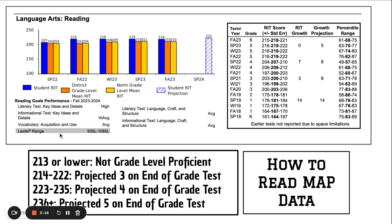Students are tested in different categories and there are five of them: literary text key ideas and details — the student scored very high in that category; informational text key ideas and details, which is nonfiction — that's high average; vocabulary — average; literary text language craft and structure — average; and then another nonfiction language craft and structure.